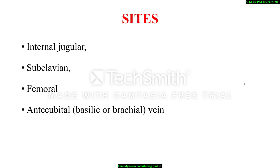The sites for insertion of the pulmonary artery catheter include the internal jugular, subclavian, femoral, antecubital, basilic, or brachial vein. It is preferred to use the right internal jugular vein or the left subclavian vein. Femoral and antecubital veins are generally avoided, but can be used when no other access is available.